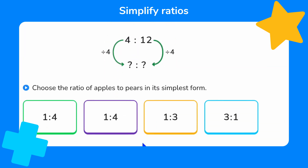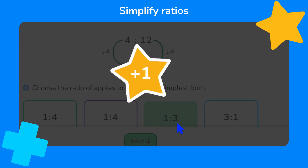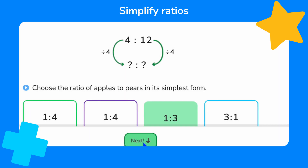We can then use the highest common factor to divide both parts of the ratio to convert it into its simplest form. Four divided by four is one. Twelve divided by four is three. Remember, we must keep the parts written in order. So the ratio of apples to pears in its simplest form must be one to three. Great job — that's another doodle star.